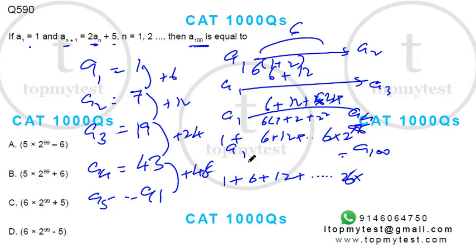for a₁₀₀, it will be 6 times (1 plus 2 plus 2² till 2⁹⁸). So if I add this, this will be 1 plus 6 times (1 plus 2 plus so on till 2⁹⁸).